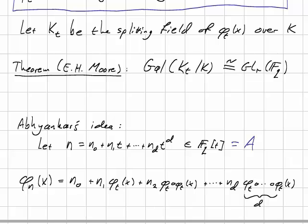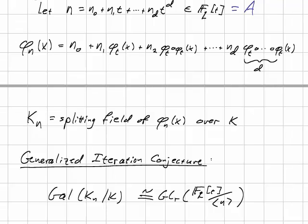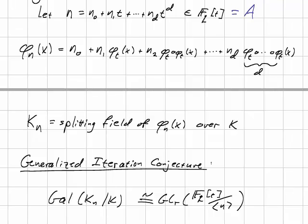So that we now get a rather large polynomial. And what Abhyankar conjectured is that its Galois group is, in fact, F_q[t], modulo the ideal generated by n. So, in particular, if n is an irreducible polynomial, we really do get GL_r over a larger finite field without increasing the base field.